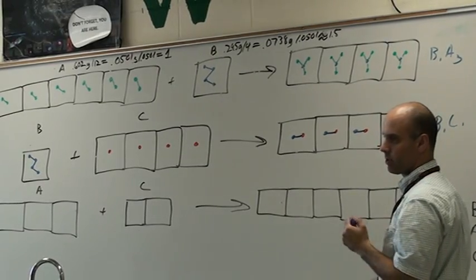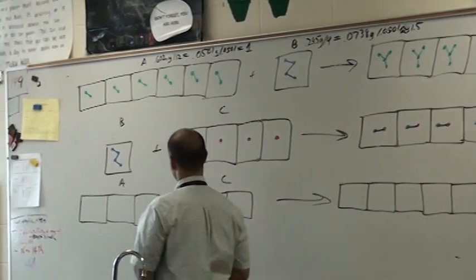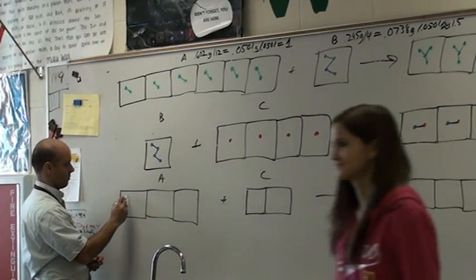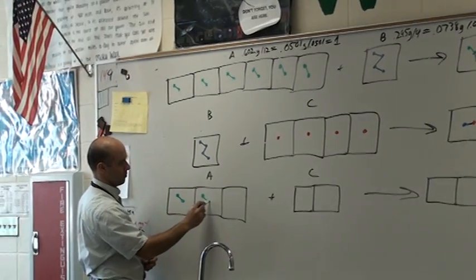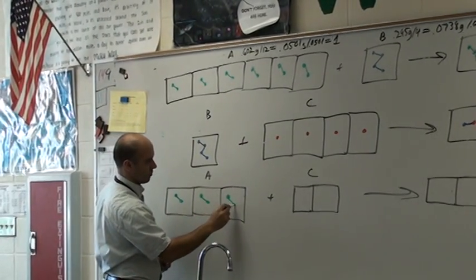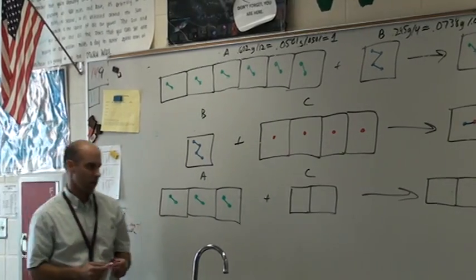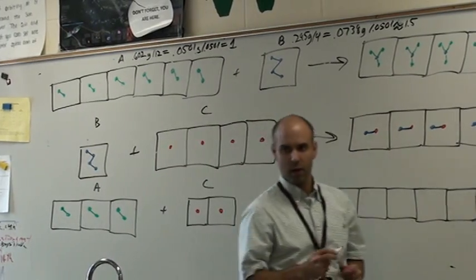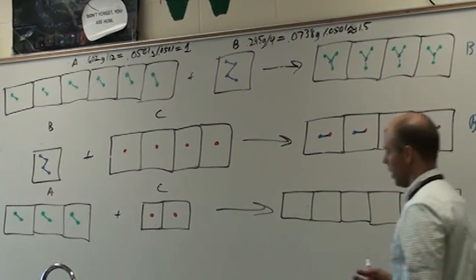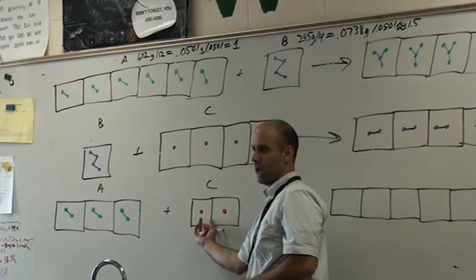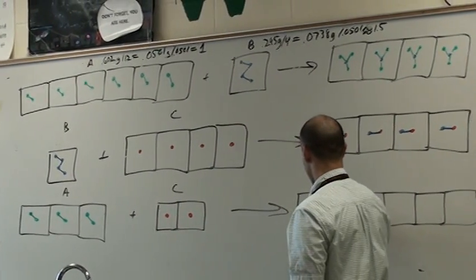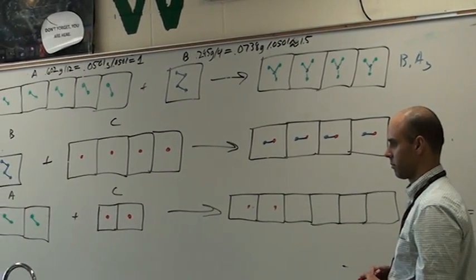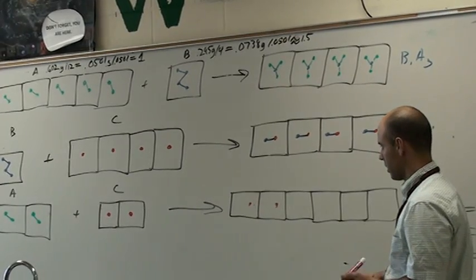So this last one then should actually be pretty easy, Cassidy, because we now know what everything is. A is diatomic, right? C is monatomic. Except now we have a problem, don't we, Janneke? Because I only have two C atoms. So if I put them in my boxes here, I have nothing else to put in. So that's a problem.